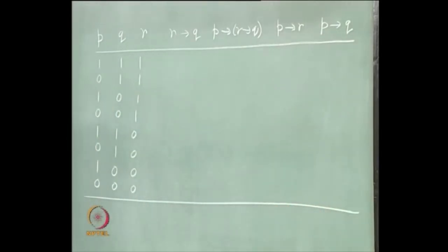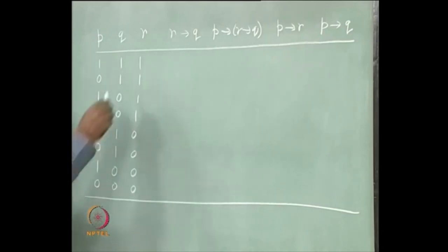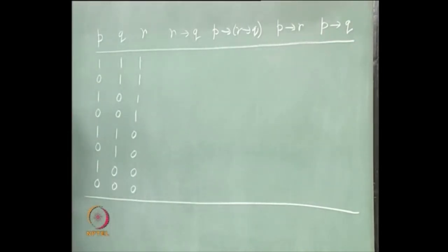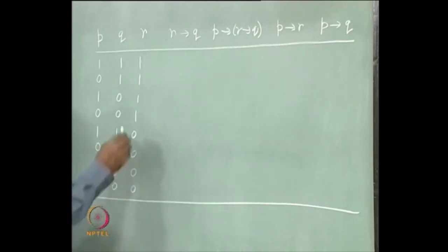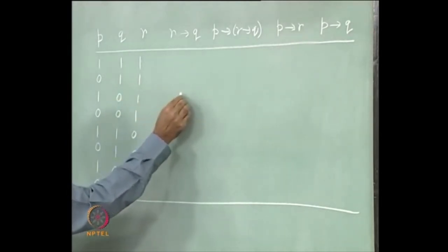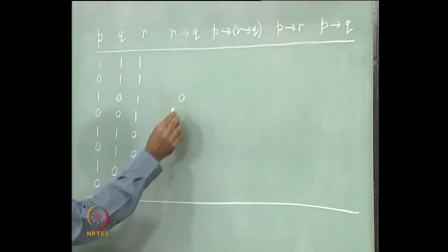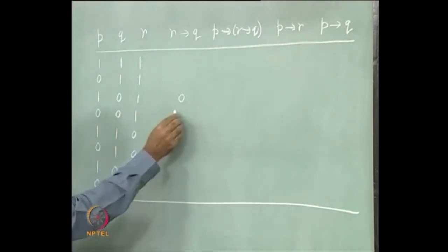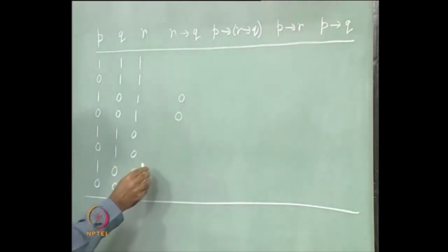You have to evaluate all the connectives. r implies q becomes 0 only when r is 1 and q is 0. So in those cases it will be 0.